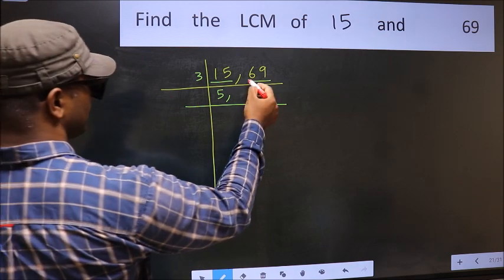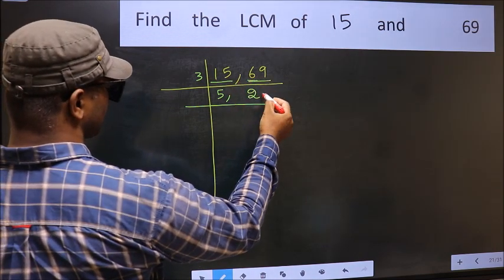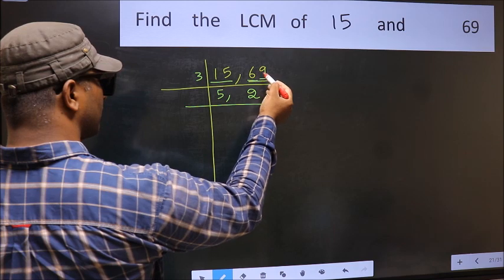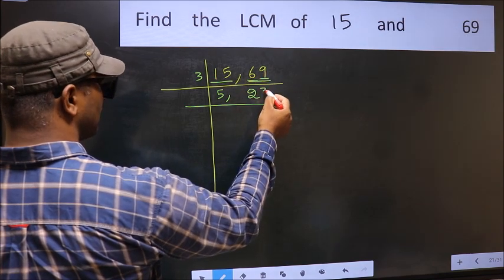First number 15 divided by 3: 3 times 5 equals 15, so we get 5. The other number 69 divided by 3: 3 times 23 equals 69, so we get 23.